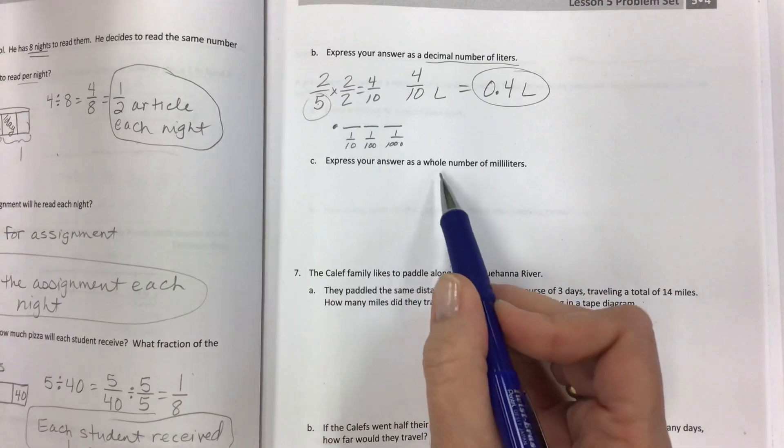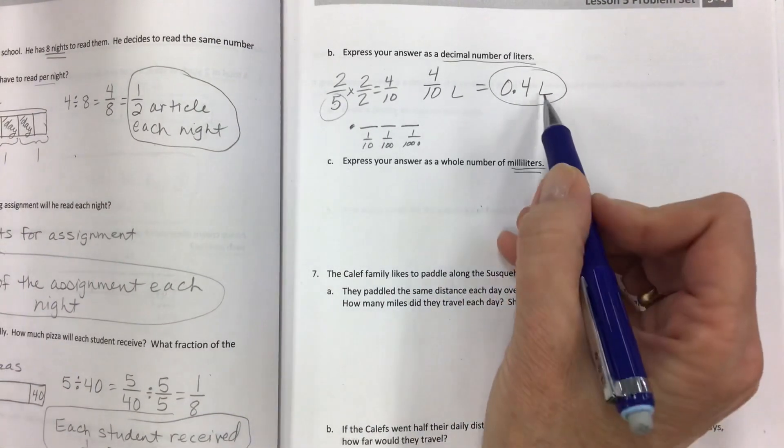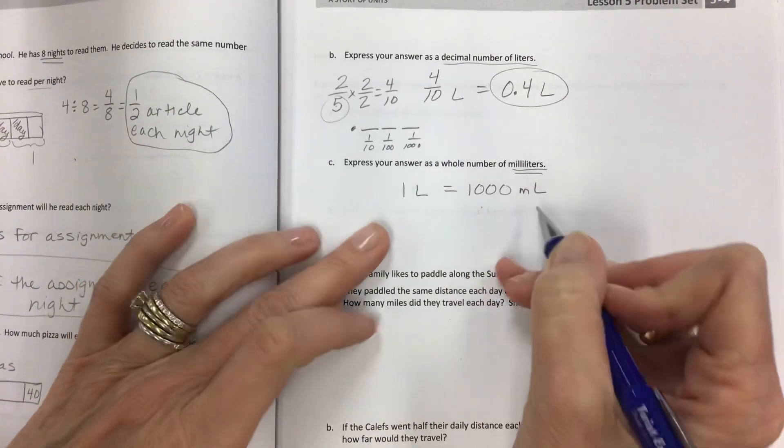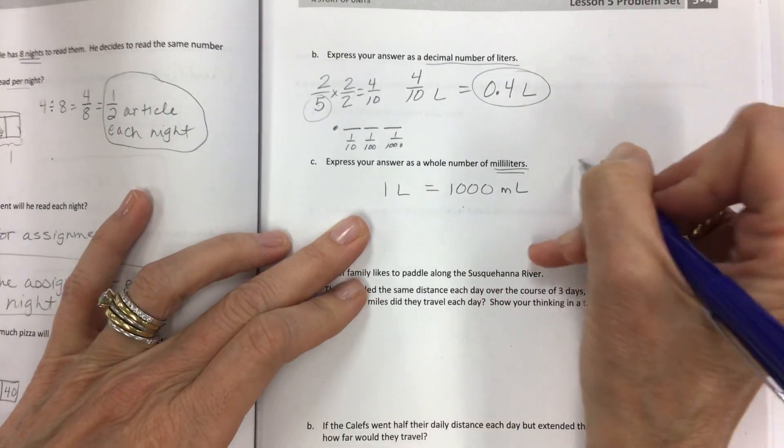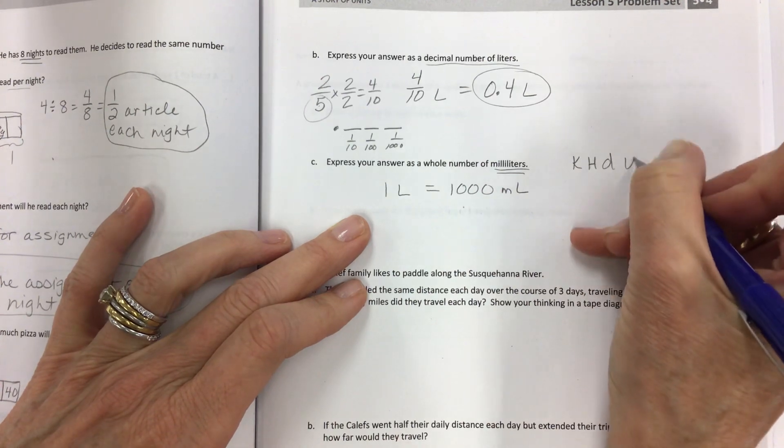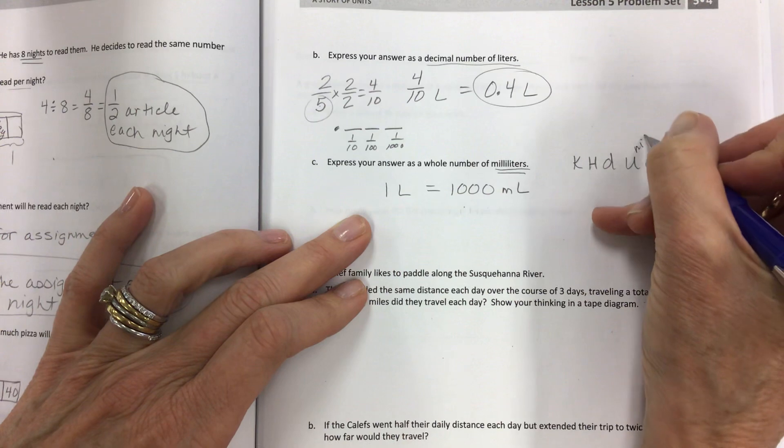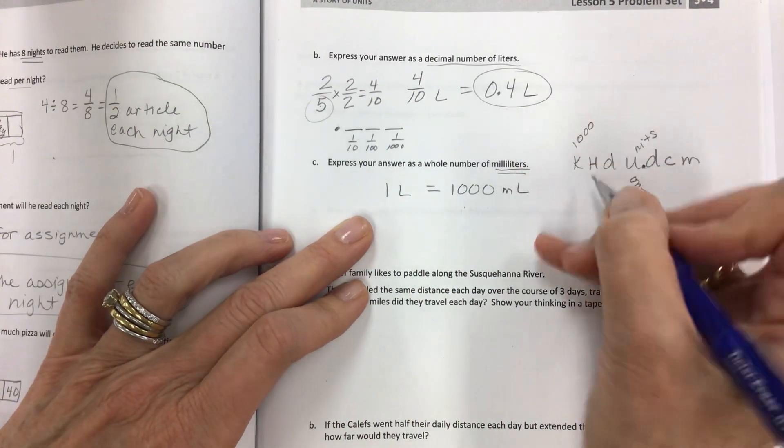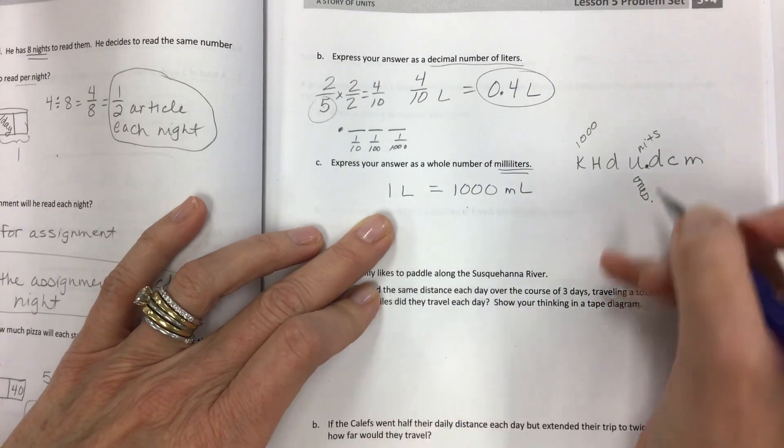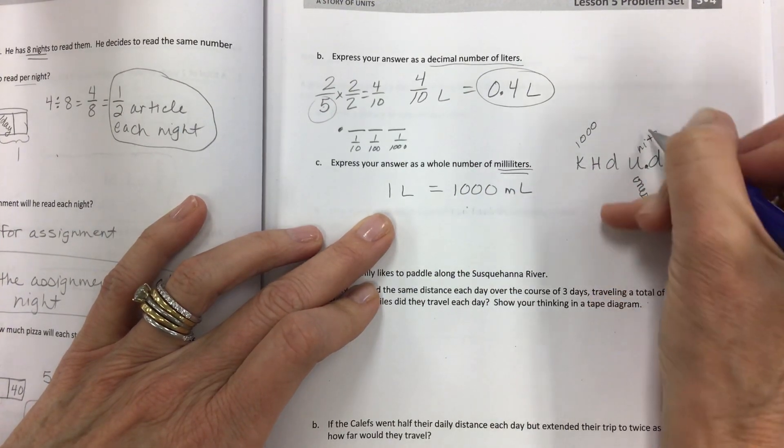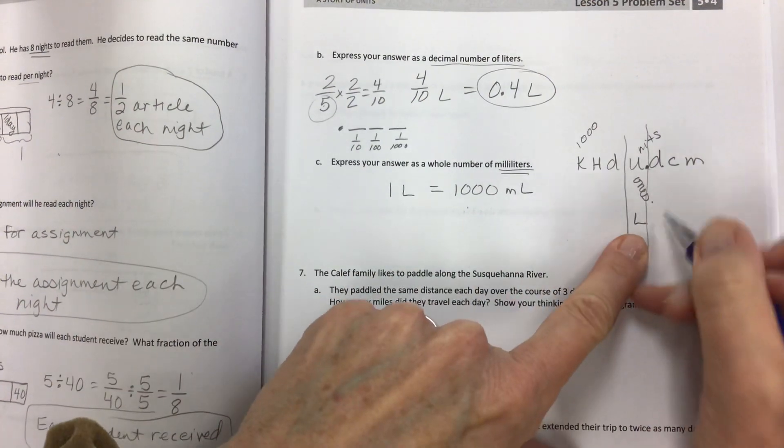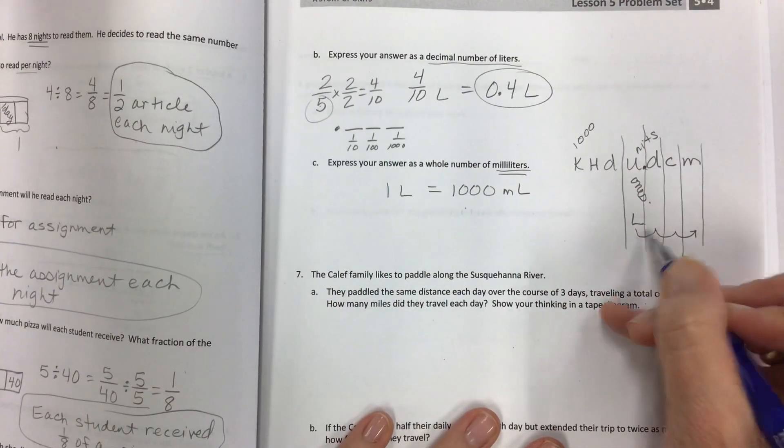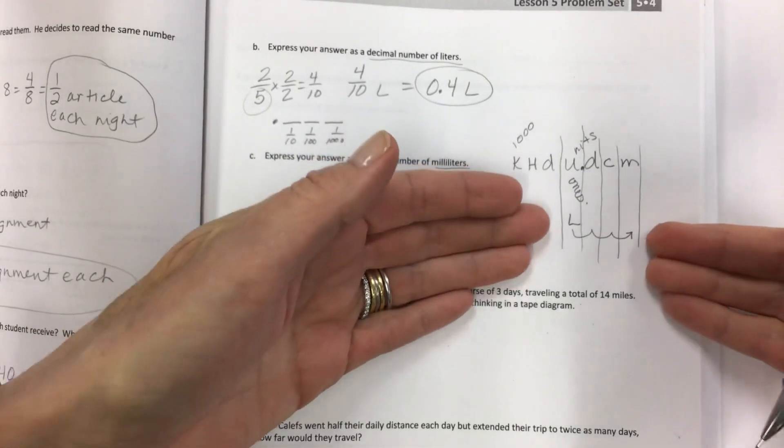Now what about this one? Express your answer as a whole number of milliliters. Well, if we're dealing with liters, we know that one liter is equal to one thousand milliliters. Maybe you know that or maybe you totally forgot. King Henry died unexpectedly drinking chocolate milk. This is the units. This is like the ones place. This is the decimal. This is the thousands. So when you talk about liters, this is the liter right here in this column. Then if you're switching over to milliliters, it's a one, two, three position shift.